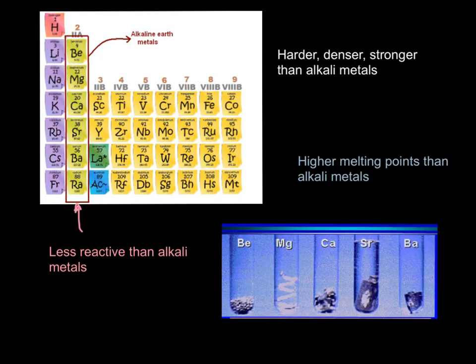So the next group we're going to talk about here, the second group, group two, are your alkaline earth metals. Their characteristics are that they're harder, denser and stronger than alkaline metals. They have higher melting points than alkaline metals, and they're less reactive. So if I throw magnesium or calcium in water, they don't usually do anything at all. They just kind of sit there. And here are some pictures of your alkaline earth metals. They're not great pictures, but basically they're all kind of silver metals.